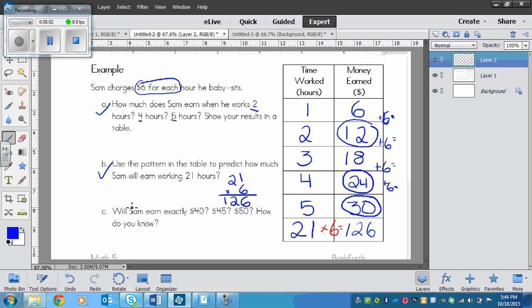Now C: Will Sam earn exactly $40, $45, $50? How do you know? We know that at 5 hours he earns $30. So now we need to see if he'll earn $40, $45, or $50. We don't have space on our table but we can do it over here in our own second table. This is hours and this is money. We know that 5 hours is $30. Then 6 hours is 30 plus 6, which is $36. Then 7 hours, 36 plus 6 would be $42.